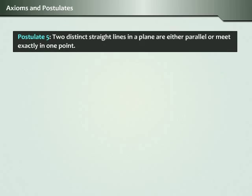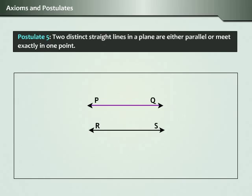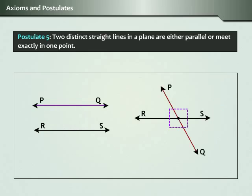This is the famous Euclid's parallel postulate. What it asserts is that two distinct straight lines in a plane are either parallel or meet exactly in one point.